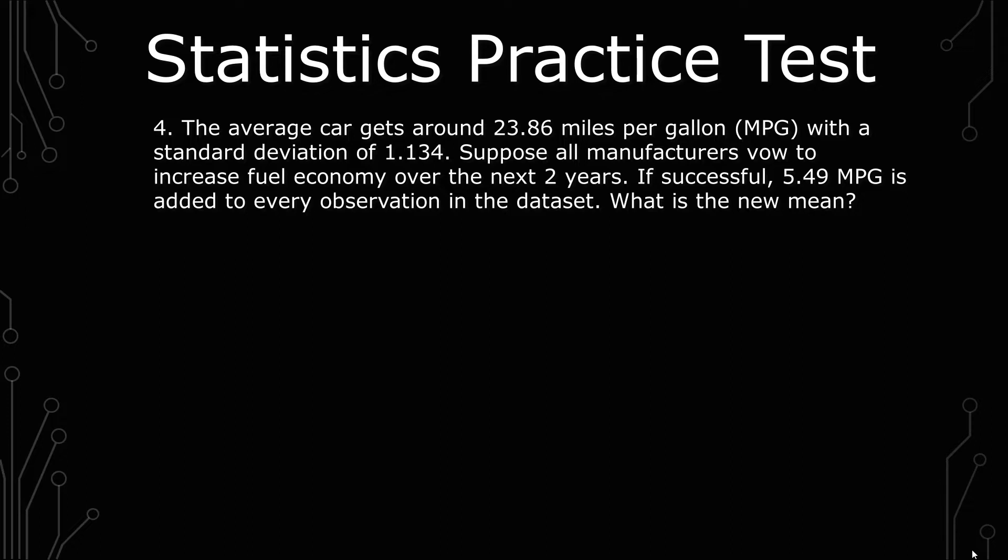The question is: the average car gets around 23.86 miles per gallon with a standard deviation of 1.134. Suppose all manufacturers vow to increase fuel economy over the next two years. If successful, 5.49 miles per gallon is added to every observation in the dataset. What is the new mean?